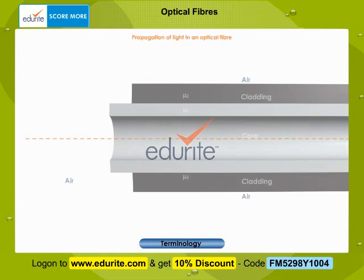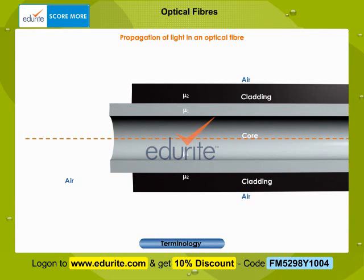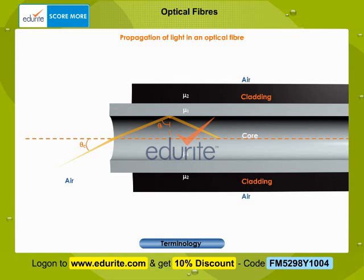Propagation of light in an optical fiber: let a ray of light be incident on the fiber making an angle θc with the axis as shown here. It gets refracted into the fiber. Let the refracted ray make an angle θi at the core and cladding interface. If θi is greater than the critical angle θc, then the ray suffers total internal reflection, so all the energy in the ray of light is reflected into the core and none escapes into the cladding.